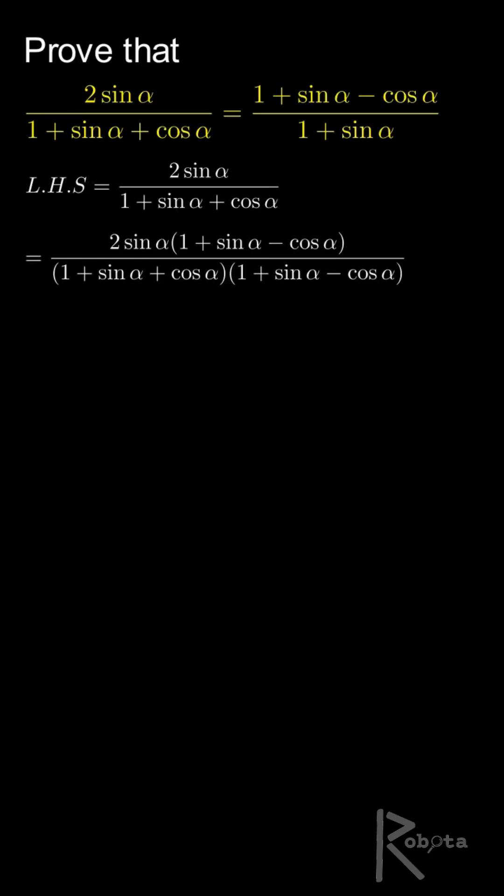This is a technique to simplify the expression using the difference of squares identity. In the denominator, we now have a product of two expressions: 1 plus sin α plus cos α multiplied by 1 plus sin α minus cos α. This is in the form of a plus b times a minus b, which gives us a squared minus b squared.